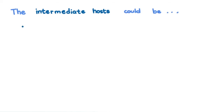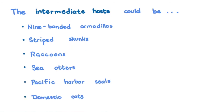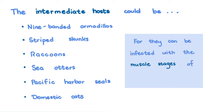The intermediate host could be nine-banded armadillos, striped skunks, raccoons, sea otters, Pacific harbor seals, or domestic cats, for they can be infected with the muscle stages of Sarcosystis neurona. It is when opossums eat sarcocysts containing muscle tissues from an infected intermediate host that the life cycle completes.